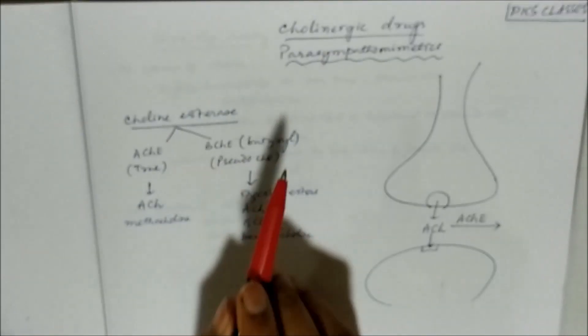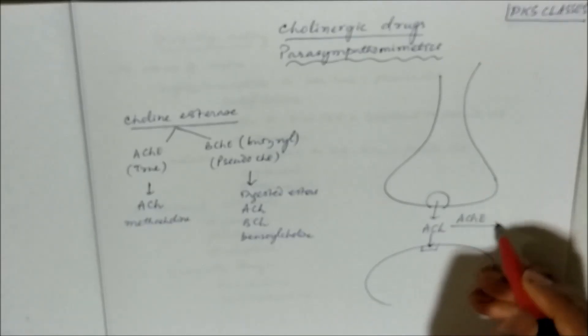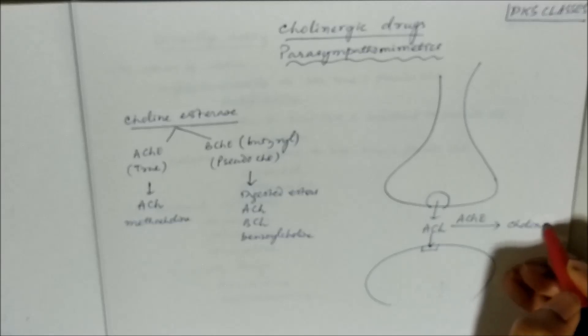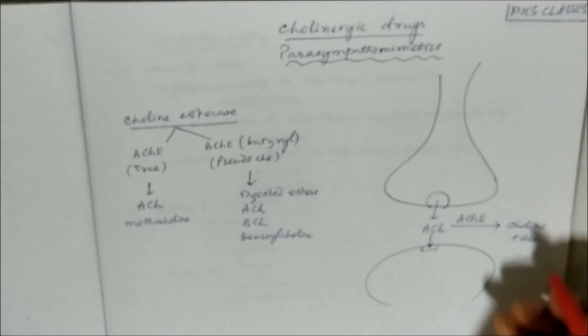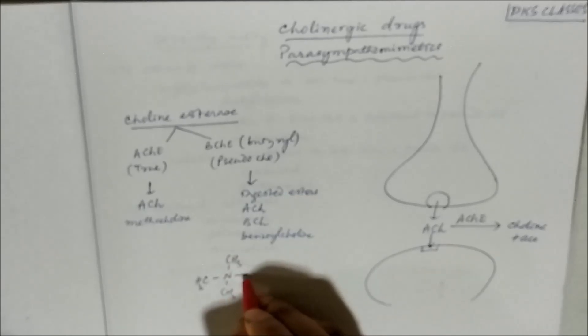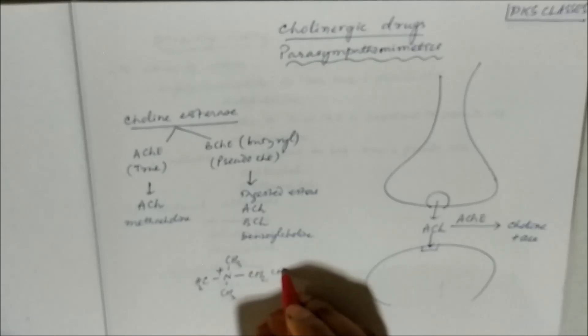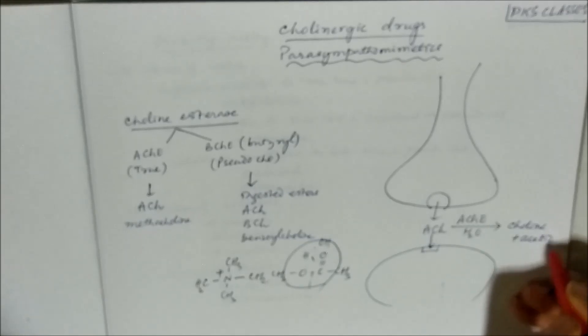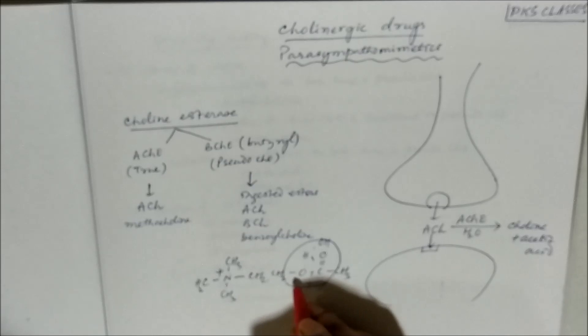That is the difference between the two cholinesterases. Acetylcholine, when degraded by cholinesterase, is broken down to choline and acetic acid. The ester bond is hydrolyzed - water is added, yielding choline plus acetic acid (CH3COOH), with the choline portion containing the N(CH3)3-CH2-CH2-OH group.